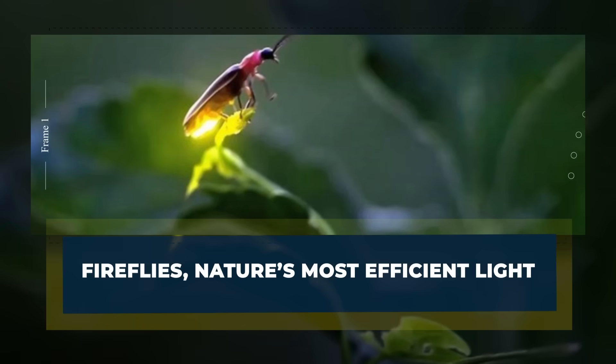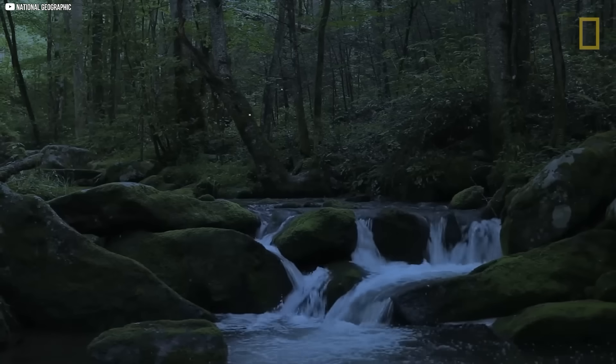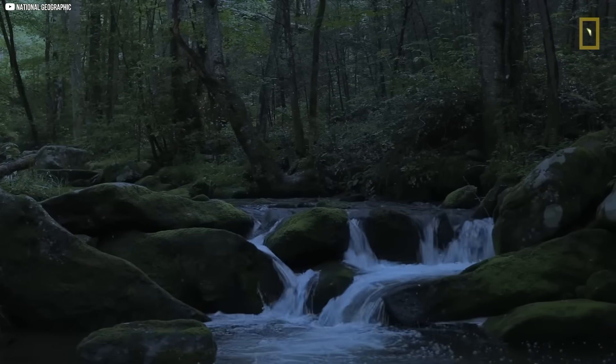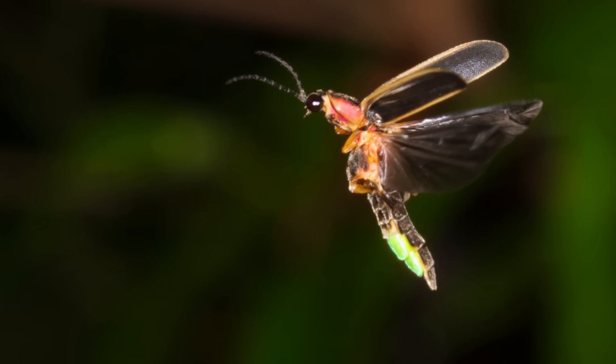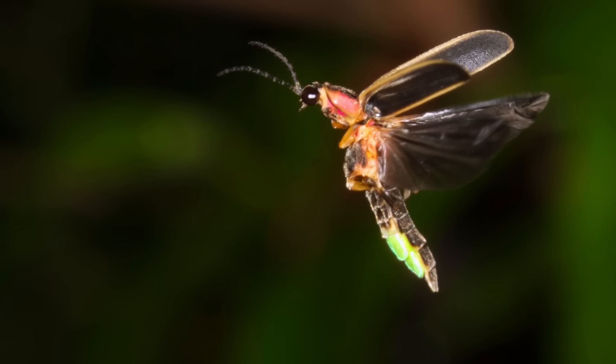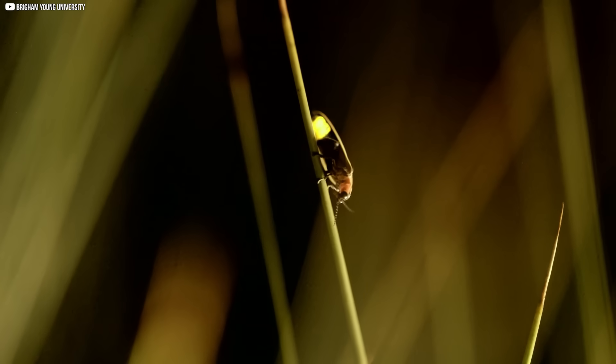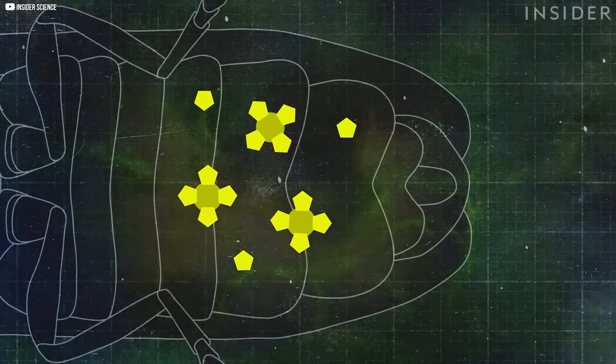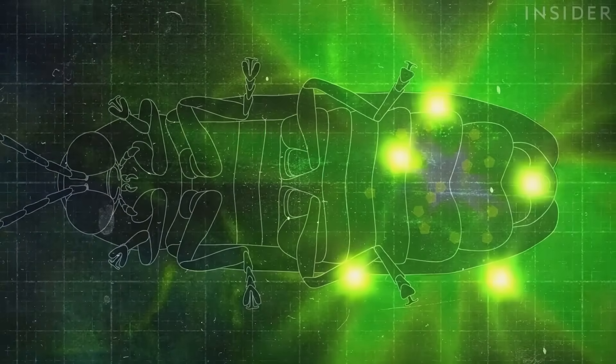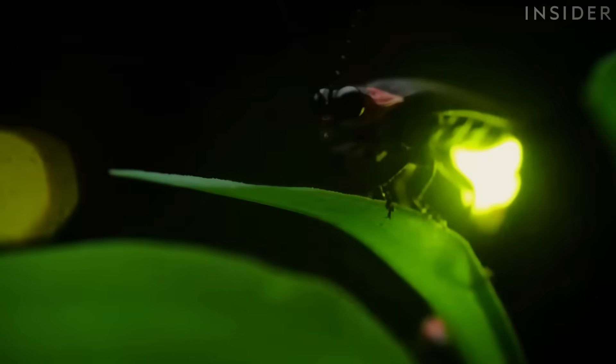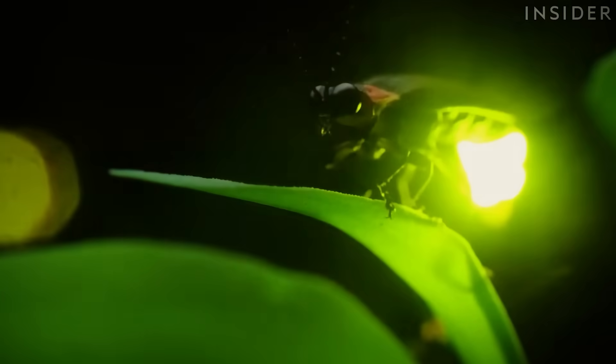Fireflies, nature's most efficient light. They drift through summer air like living sparks. But fireflies aren't just magical, they're master engineers. These small beetles produce light using bioluminescence, a chemical reaction inside their abdomen that converts energy directly into visible light. But what makes this extraordinary isn't just the glow, it's the efficiency.